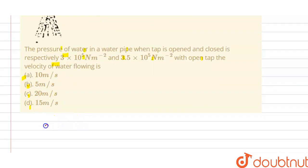So the solution of this question is: we have the pressure when the tap is open, P_open is 3 × 10^5 N/m².